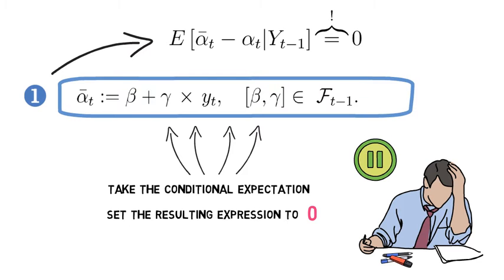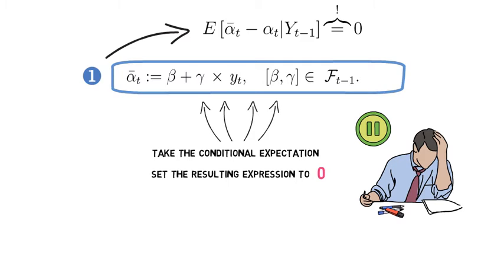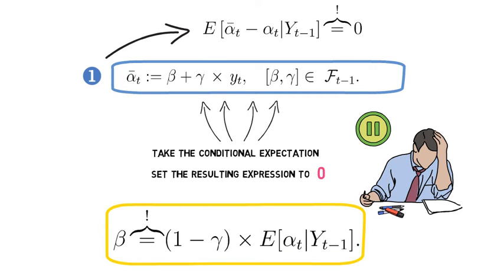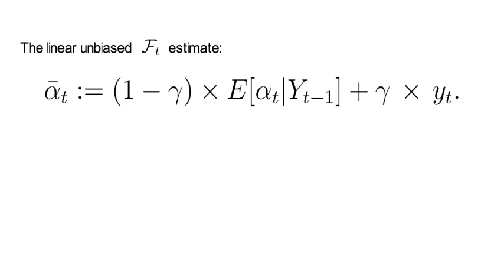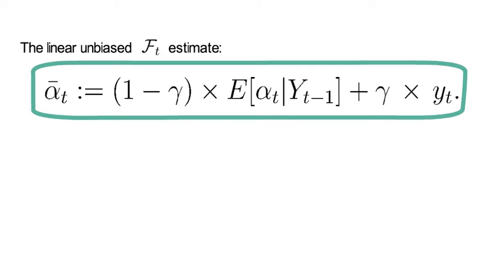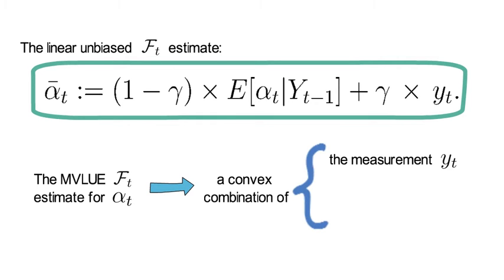If you have done so, then you have derived that in order to have an unbiased linear estimator, the constant beta needs to be restricted as follows. This tells us that the linear unbiased FT estimate for alpha t takes the following form. That equation is interesting because it shows the MVLUE FT estimate for alpha t is a convex combination of measurement yt and the MVLUE FT-1 estimate for alpha t.